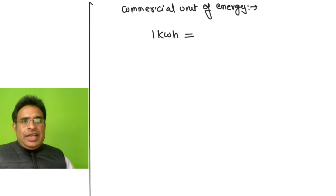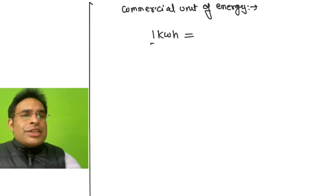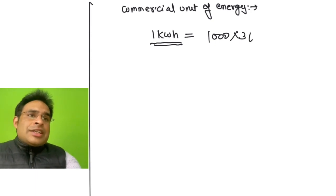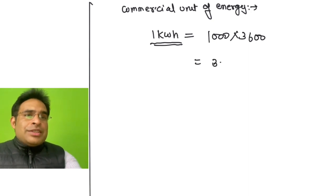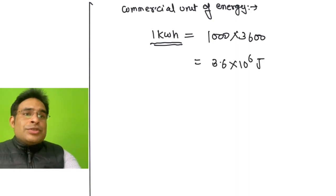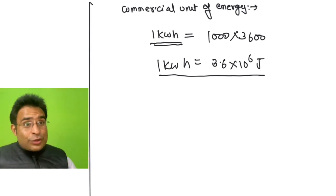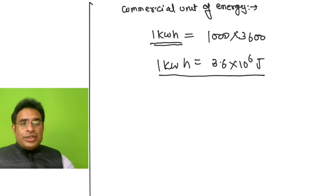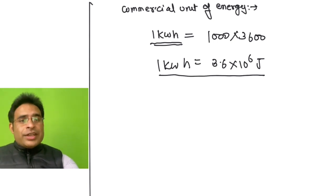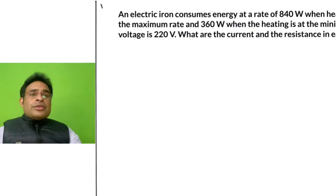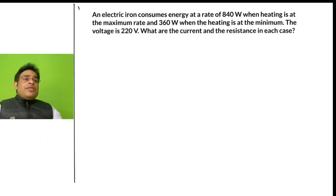What is the commercial unit of energy? The commercial unit of energy is one kilowatt-hour (kWh). One kilowatt is 1000 watts and one hour is 3600 seconds. So one kWh = 3.6 × 10⁶ joules. This is used for measuring electricity in the electric meter — one kilowatt-hour is also called one unit.